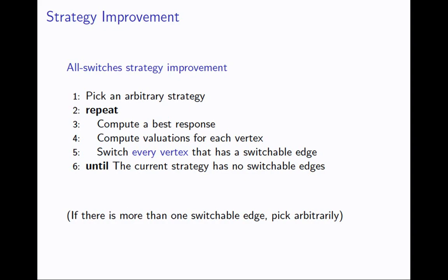All-switches strategy improvement can take a large game and solve it in just a handful of iterations. Other switching rules studied for parity games do better in theory — all-switches is 2^n in the worst case while others are 2^(√n) — but they're all single-switch policies. If you only ever switch a single vertex per iteration and your initial strategy was wrong on half of 10 million vertices, you'll inevitably take 5 million iterations. For that reason I focus on all-switches strategy improvement.